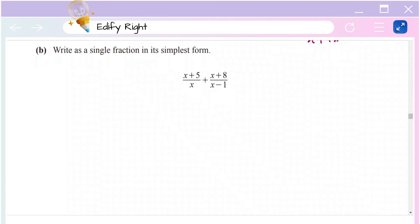Next, we have: write as a single fraction in its simplest form. We have to find the simplest form of this expression. The first thing you do is cross multiply.